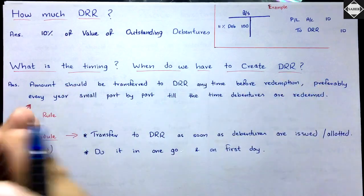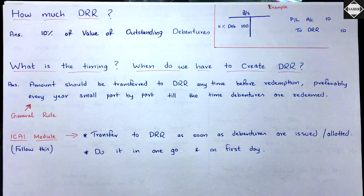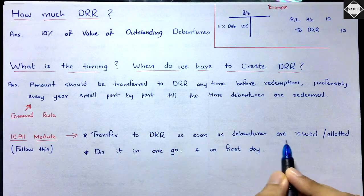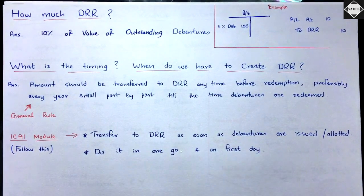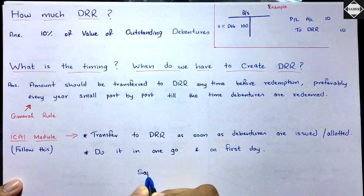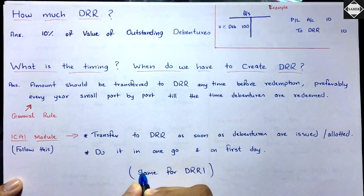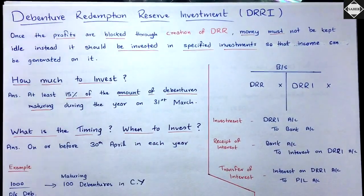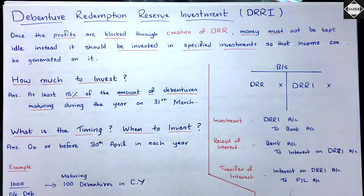The general rule is that DRR can be created anytime before redemption, but to ensure consistency in answers, we follow the ICAI module approach: transfer to DRR as soon as debentures are issued or allotted — do it in one go on the first day. The same rule applies to DRRI (Debenture Redemption Reserve Investment). We also can't keep the investment money idle; we have to invest at least 15% of the amount of debentures maturing during the year.